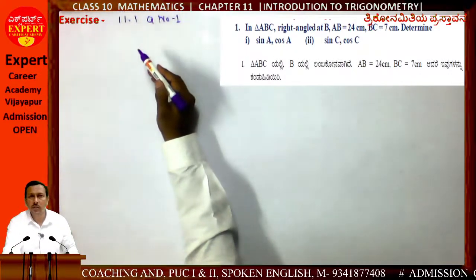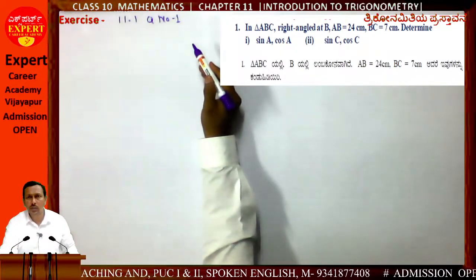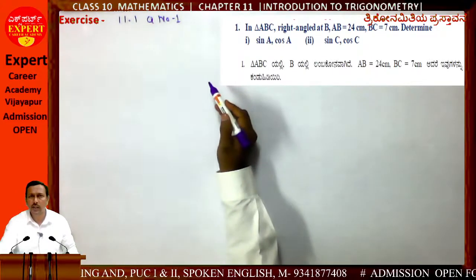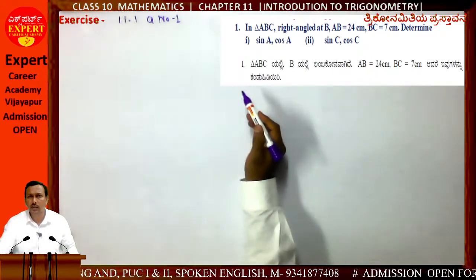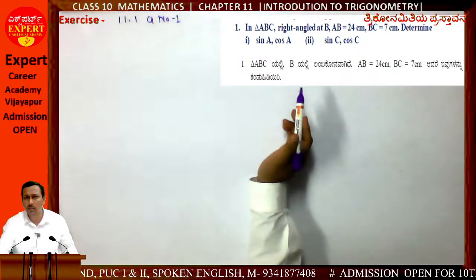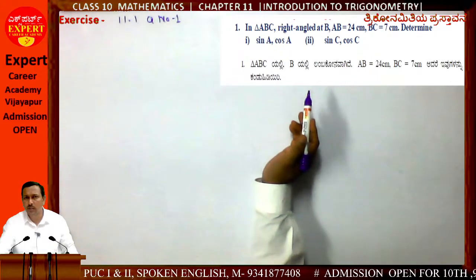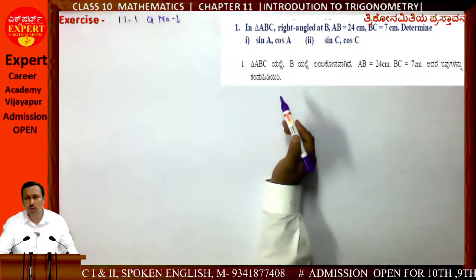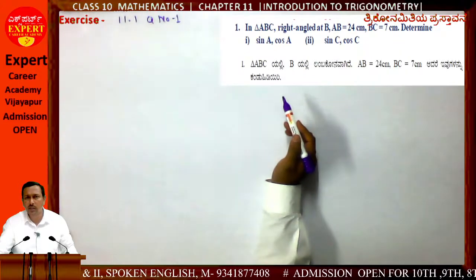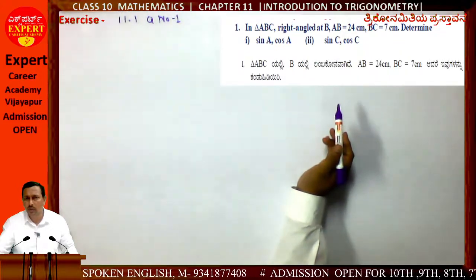Class 10th Mathematics, Chapter 11: Introduction to Trigonometry. In triangle ABC, right-angled at B, AB = 24 cm and BC = 7 cm. Determine sin A, cos A, sin C, and cos C.